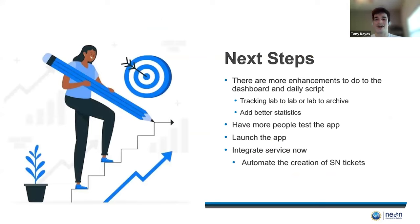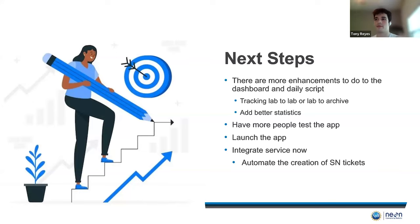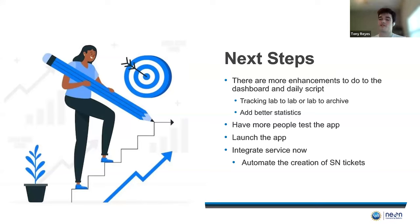Next steps: as I said, I couldn't do a lot of work for the dashboard, so there are still more enhancements to make — for example, adding better statistics, better value boxes, or more dynamic information. If you want to see the amount of problem shipments in a past month, being able to choose that would be a nice enhancement. Also, tracking lab-to-lab and lab-to-archive shipments — right now it's only focused on domain shipments. The next steps would be to have more people test the app, find any errors or bugs, launch the app once it's ready, and in the future, it would be amazing to have ServiceNow integrated, which would lessen the work of the CLA team a lot.